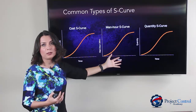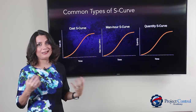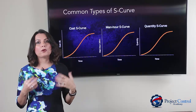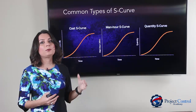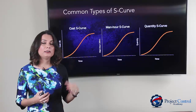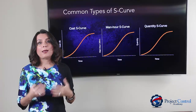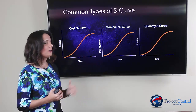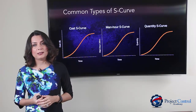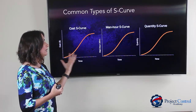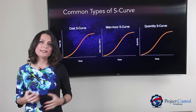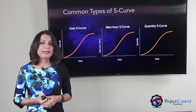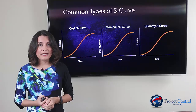Another type of S-curve you will see in projects is the quantity S-curve — showing the quantity of material, equipment, or something you want to measure against time. It's a very good comparison curve for comparing what you were planning in terms of quantity versus what you have actually accomplished or installed. These are the three most common S-curves in project control reports.